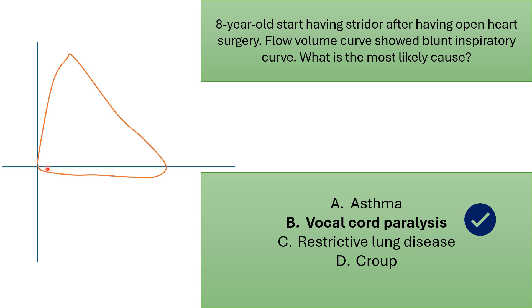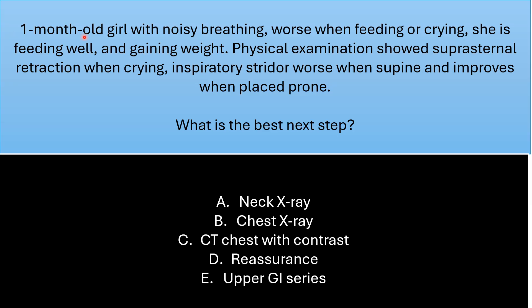The expiratory is not affected — this is a classic case of extra-thoracic obstruction. One of the most common causes is vocal cord paralysis. Next case: a one-month-old girl with noisy breathing.